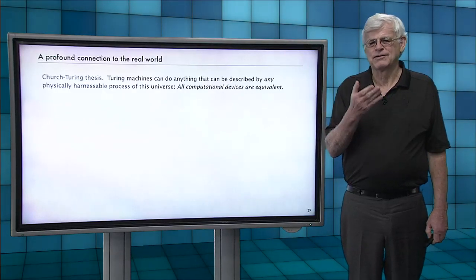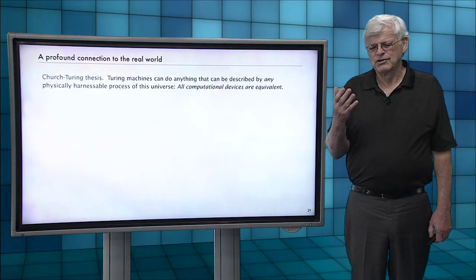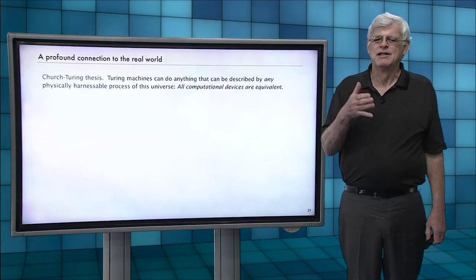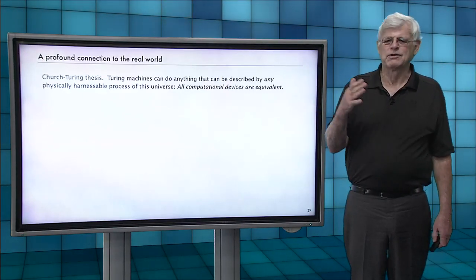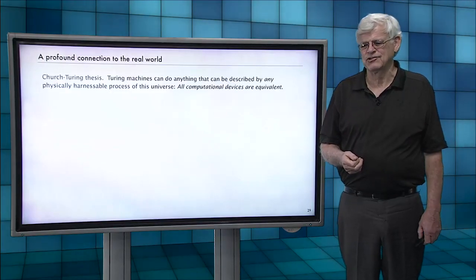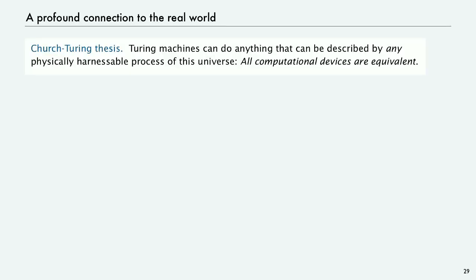And what Church and Turing articulated, and this was because many people were working on different models of computation, and they were trying to see if one would be more powerful than another, like we saw with our one-stack and two-stack machines at the end of the last lecture. By the way, a two-stack machine, as you saw when we simulated a tape with two stacks, you can make that like a Turing machine. So two-stack machines are equivalent to Turing machines, so therefore they can compute anything Turing machines can in their equivalent.